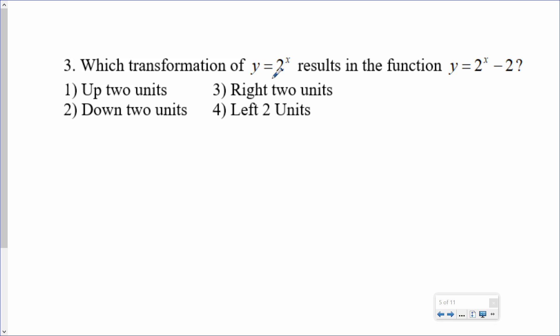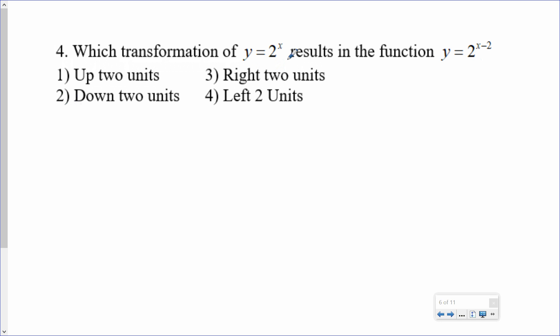Now let's answer some questions. It's giving me y equals 2 to the power of x and wants to know what happened to the original graph. I see a minus 2 — am I subtracting 2 from the x, or from the f(x), the whole thing? I have this whole thing and from the whole thing I'm subtracting 2, so I'm subtracting 2 from the f(x), which means it's going down 2. The next example: same starting function y = 2^x. That minus 2 is just with the x, so we're talking left and right — because it's minus, it's going right 2 units.